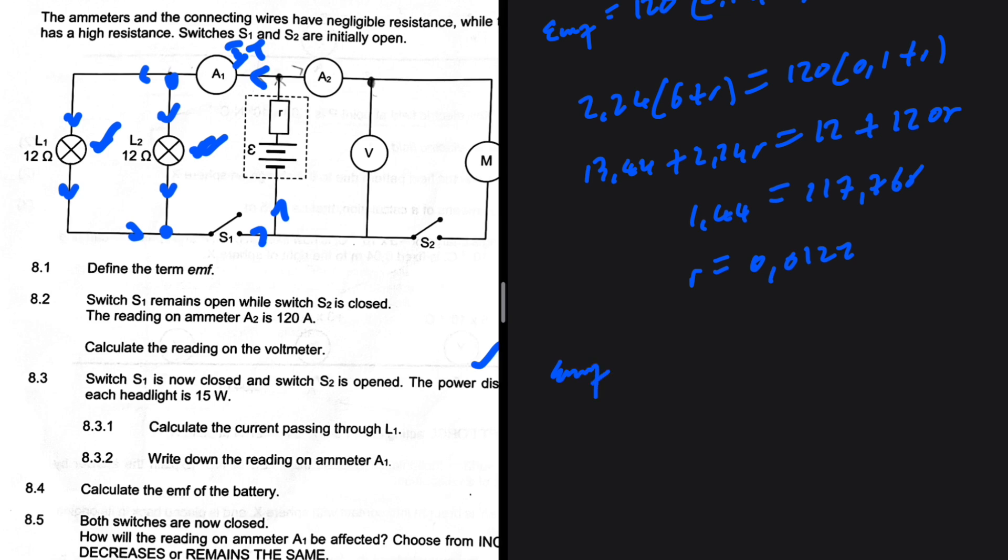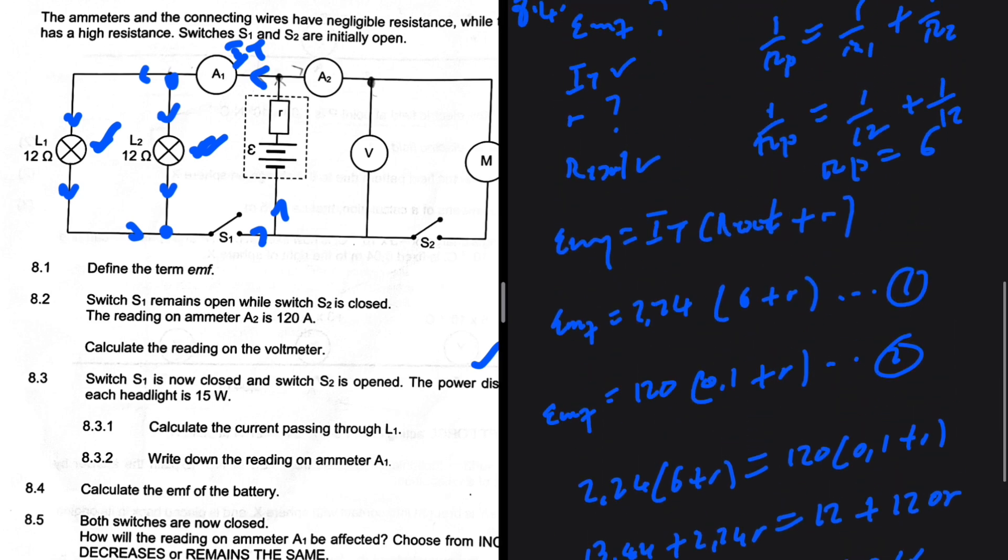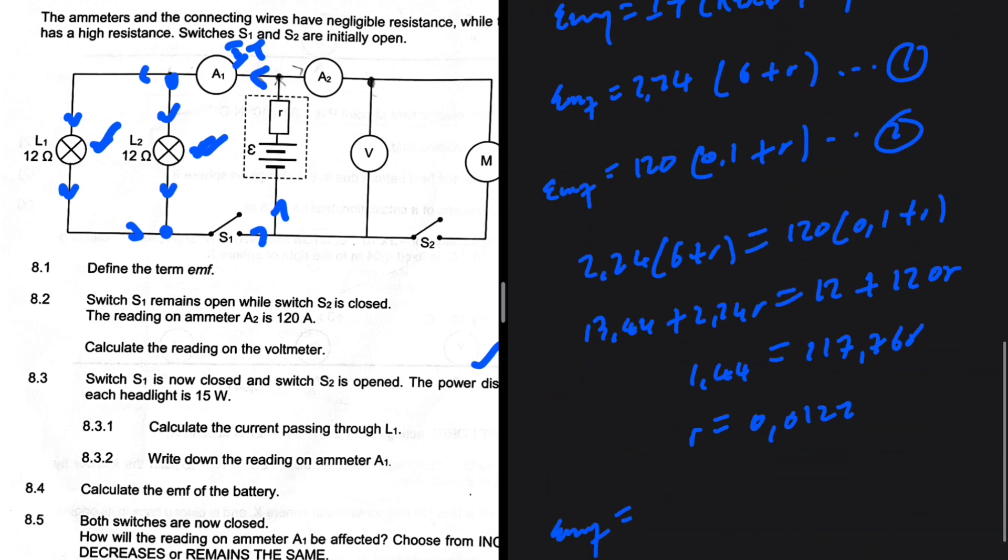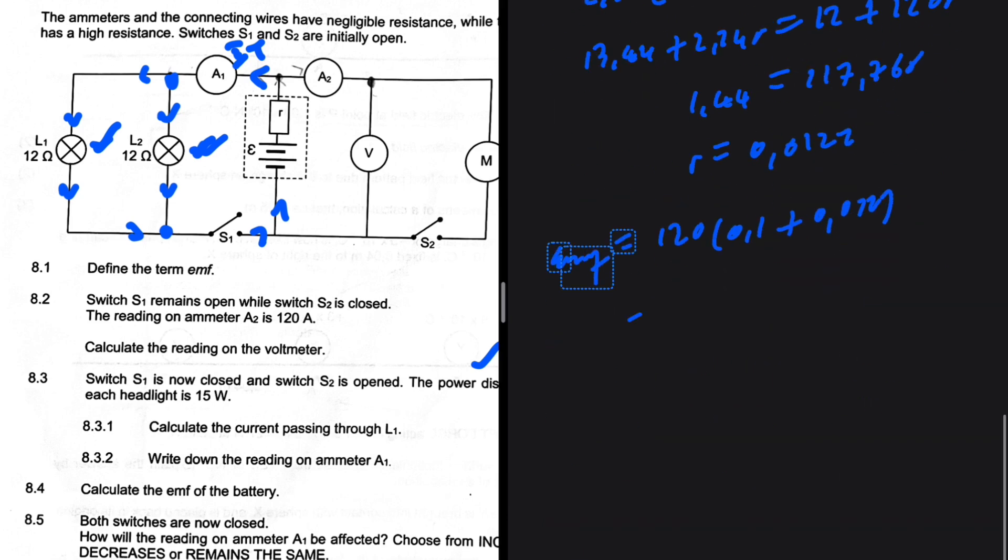So emf would therefore be equal to... now we need to substitute R in one of those equations. So 120 multiplied by 0.1 plus 0.0122. 120 times 0.1 plus 0.0122, not 0.012. Then I'm getting emf being equal to 13.46 volts. That is emf.